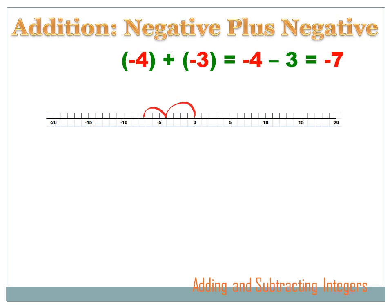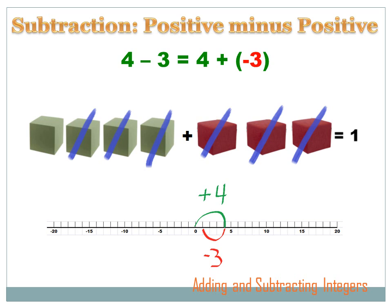What happens if we have a negative number plus a negative number? Our example is minus four plus minus three. Remember, if you're adding a negative, you can change that plus minus to just a minus, and rewrite minus four plus minus three as minus four minus three, which is minus seven. On the number line: I start at zero and go four in the negative direction, then go three more in the negative direction. That's it for addition — now let's move on to subtraction.